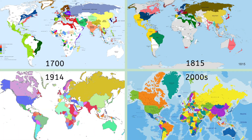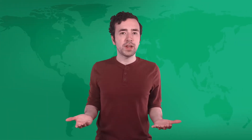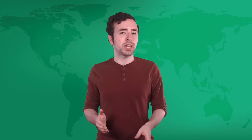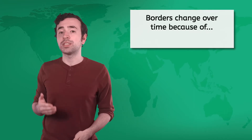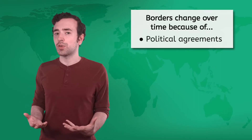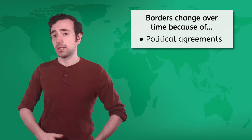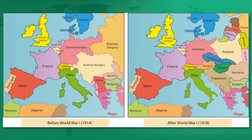So far we've learned that borders are super important, but check out these historical maps. The political borders of our world have changed so much over time. History is full of nations and states disputing territory — sometimes it leads to conflict. One major reason borders change is because of political agreements signed to resolve these conflicts. For example, treaties signed after World War One completely changed the map of Europe.